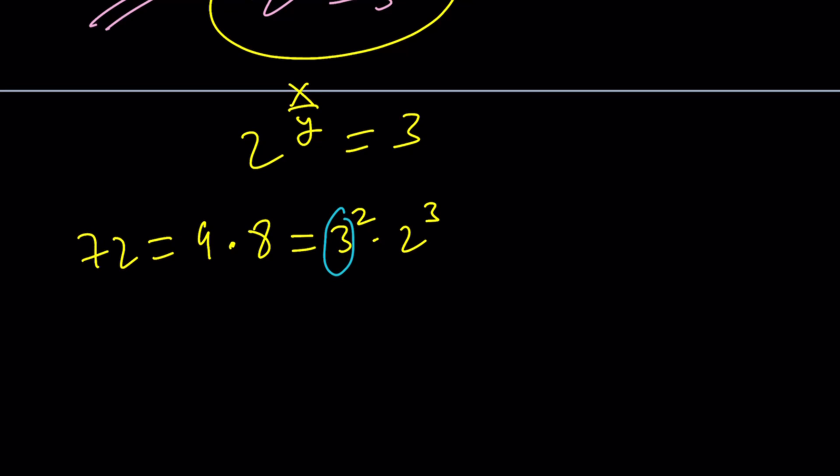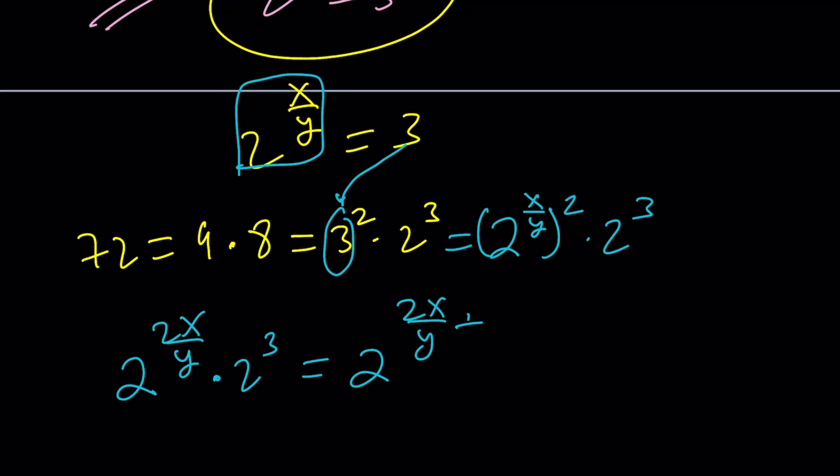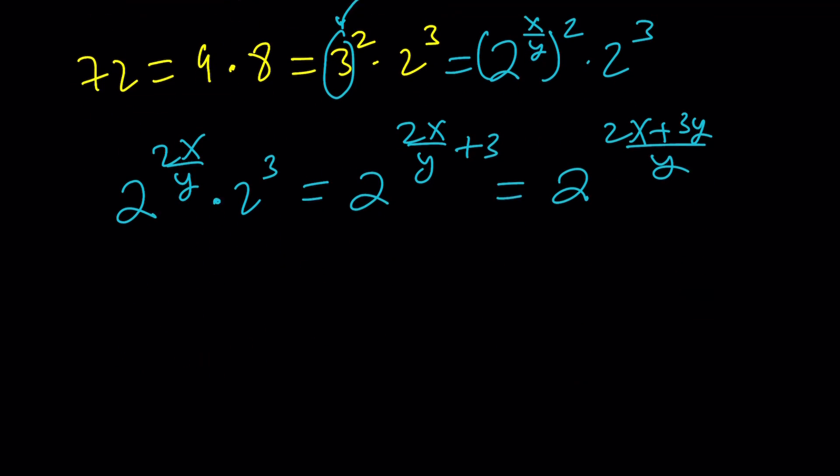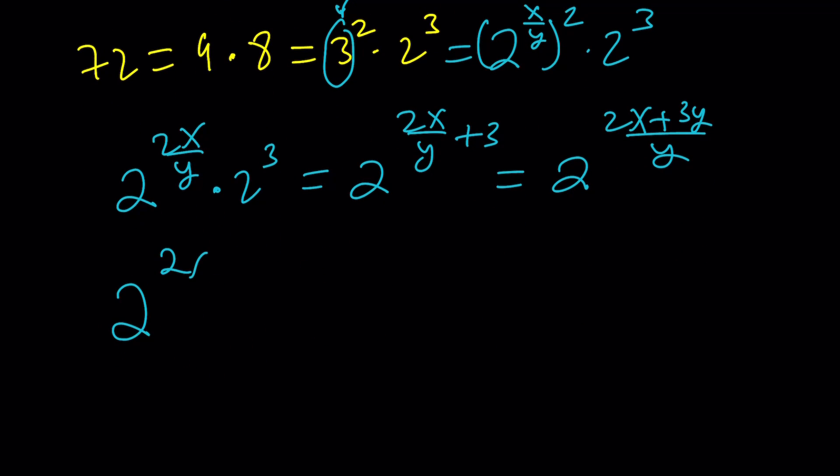2 to the power x over y, and then we're going to raise it to the 2nd, multiply by 2 to the 3rd. Now, we're going to multiply exponents, 2 to the power of 2x over y times 2 to the 3rd. Now, we're going to add the exponents, and then make a common denominator. That's what we got so far. Well, what is this equal to? 72. Let's write it down. 2 to the power of 2x plus 3y over y is 72. But at the same time, 72 is equal to 2 to the power of x.